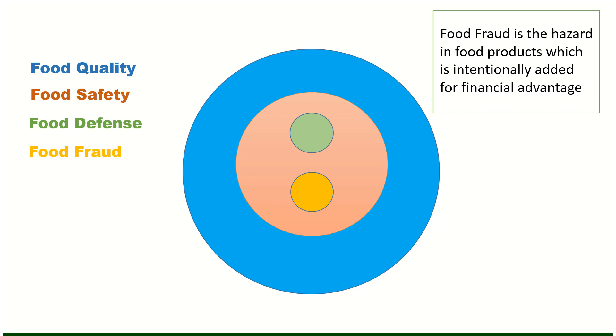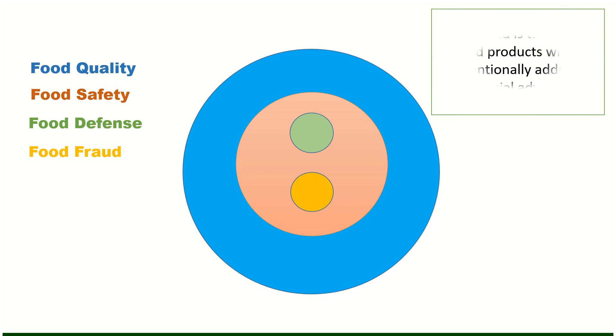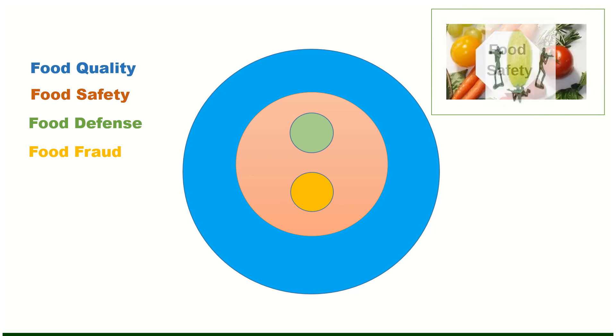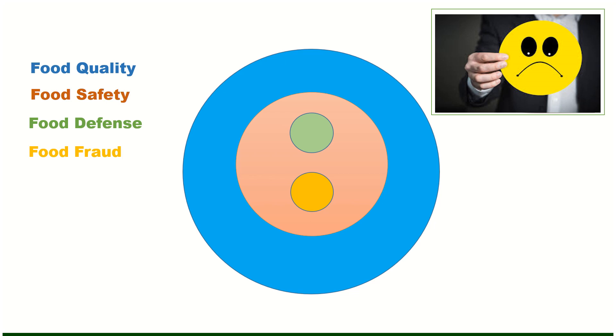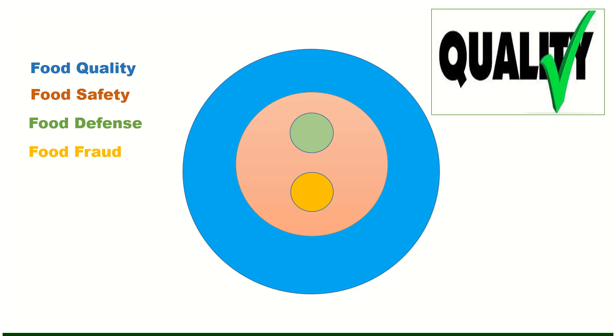So logically, if customer or consumer finds any issue related with food safety, food defense, or food fraud in a product, ultimately it will affect the satisfaction of the consumer and it means food quality is not good. Customer satisfaction will not be achieved if customer finds any issue in the product related with food safety, food defense and food fraud. In technical words we can say that it's a food product quality issue, that is why all three circles come under quality circle.